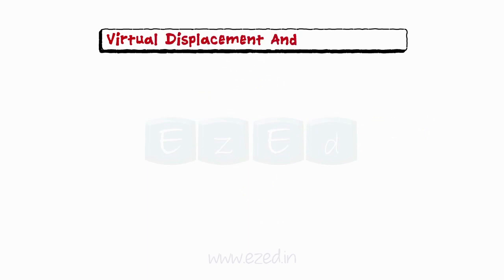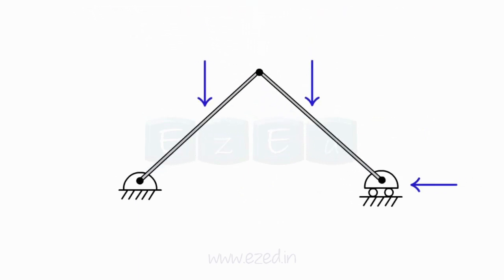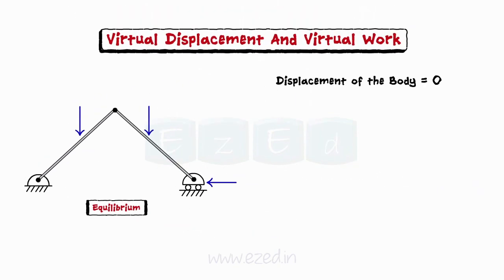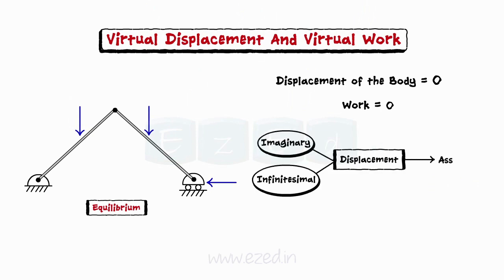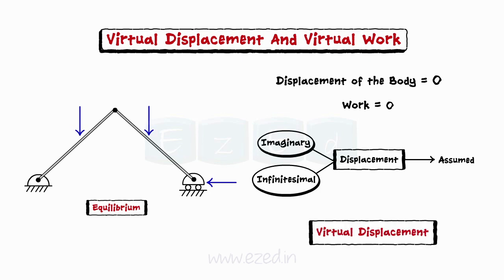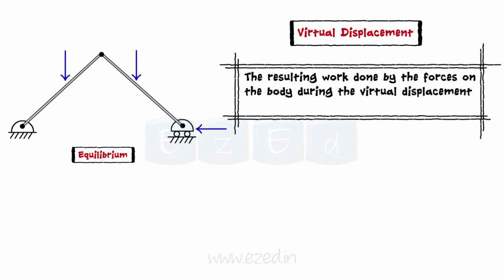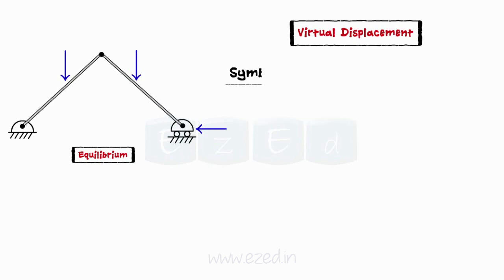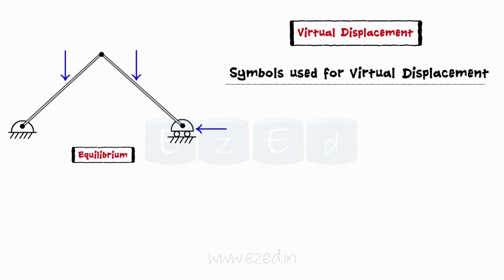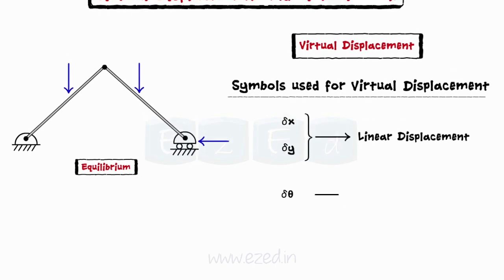We will learn about virtual displacement and virtual work. When a system of forces act on a rigid body in equilibrium and the displacement of the body is zero, then no work is possible. But an imaginary infinitesimal displacement is assumed to be given to the body in equilibrium. Such a displacement is called virtual displacement. The resulting work done by the forces on the body during the virtual displacement is called virtual work. The symbols generally used for virtual displacement are δx or δy for the linear displacement along the x-axis and y-axis respectively, and δθ for an angular displacement.